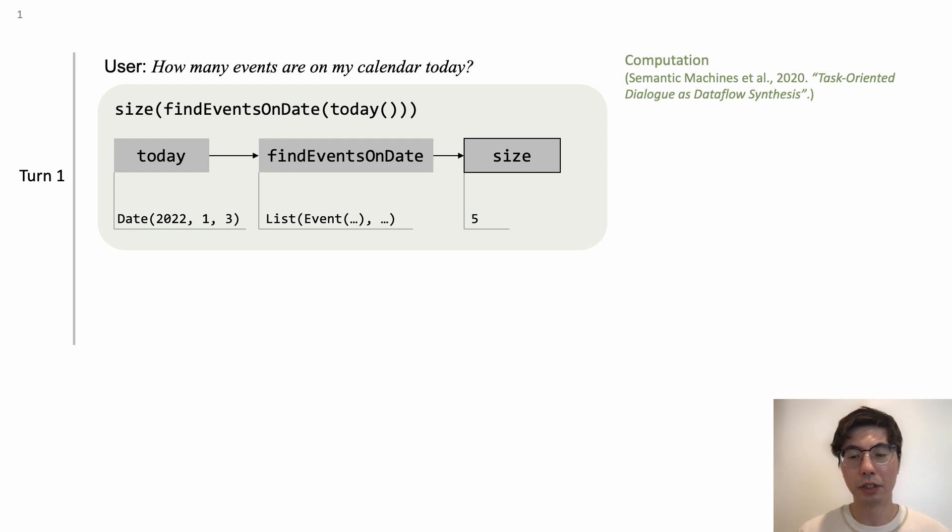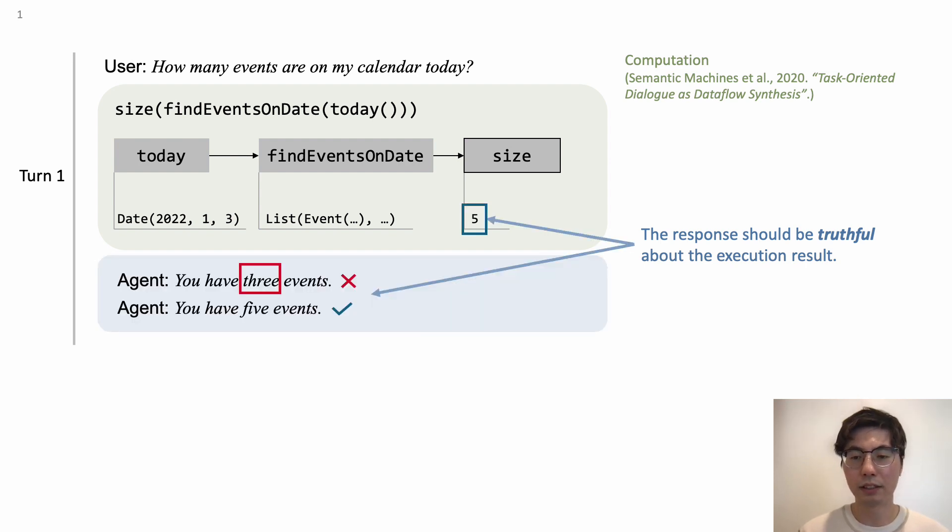Then, the agent needs to generate a response. Most importantly, the agent response should be truthful about the execution result. For example, in this first turn, it is wrong to say you have three events.